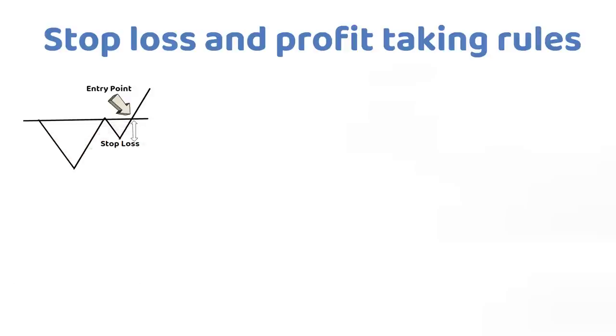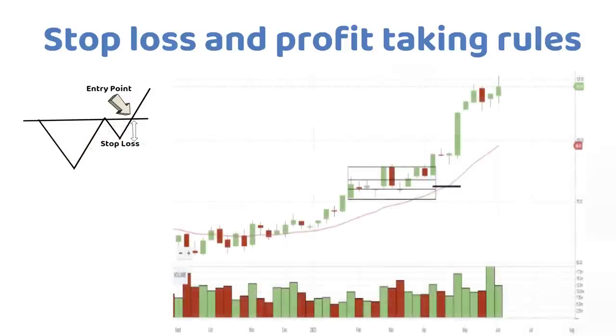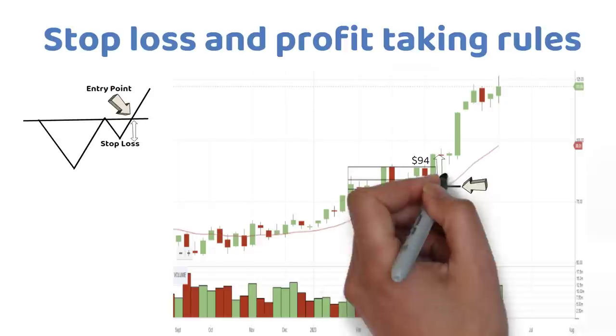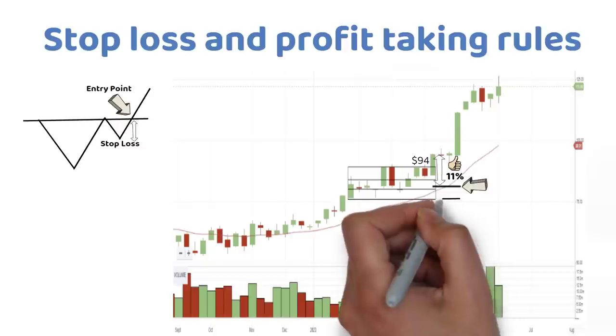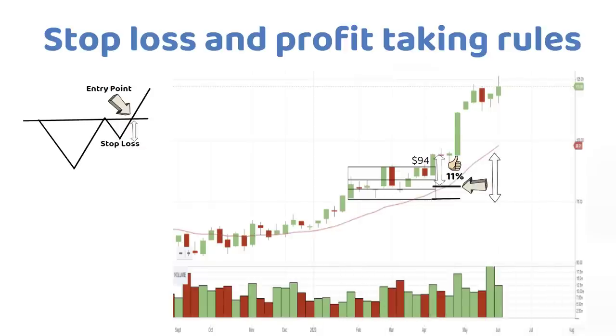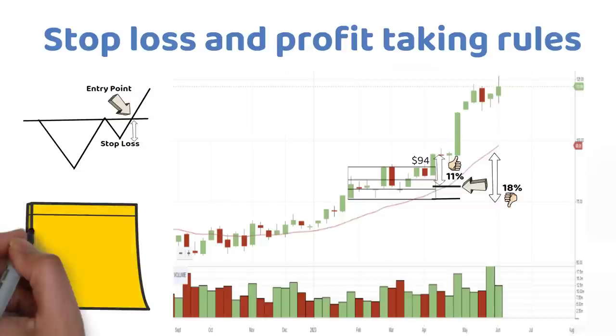For example, one of our group's recent trades was this consolidation breakout. Here, the entry point would have been $94, whilst the stop loss was placed near $84. The risk would be close to 11%, which is a solid low risk trade. Had the low of the range been near $78, the risk would have been increased to near 18%. Therefore, the risk taken would have been far less favourable. The key point here is that you must look for low risk entry points and follow a risk first approach.